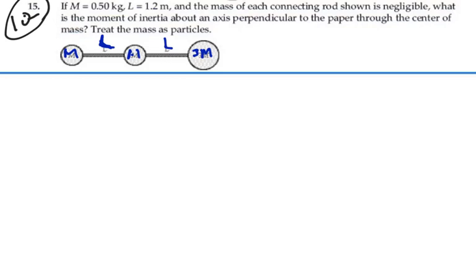Let's set up a coordinate system such that the first m is at the origin. And hence, this first m to the right is located at x equal to l, and this 3m to the right is located at x equal to 2l.